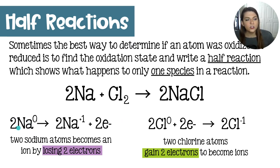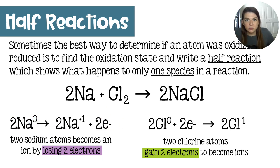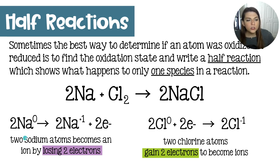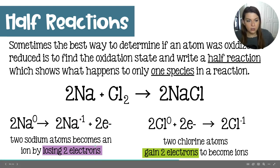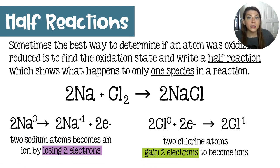To begin, we have two sodium atoms with a charge of zero, because they're atoms, and they are going to lose electrons. Losing electrons will make electrons a product — they come out and go someplace else. That would leave our two sodium atoms now as two sodium ions, each with a plus one charge. So two sodium atoms become ions by losing two electrons — they each lose one electron.